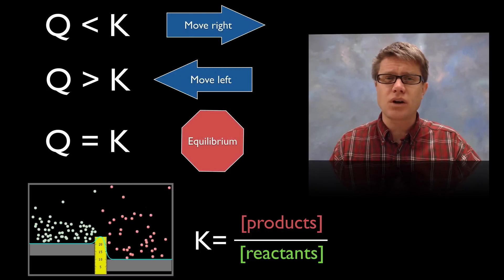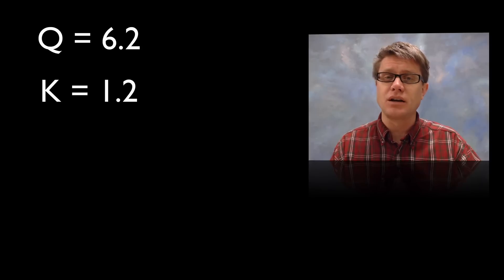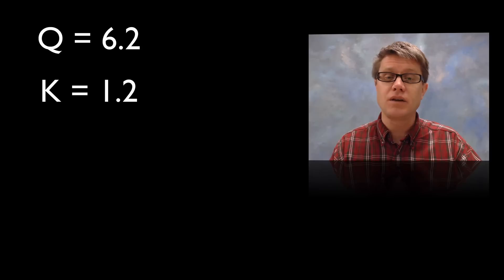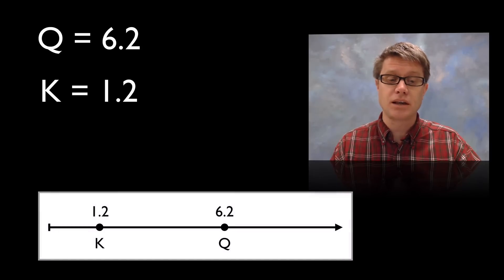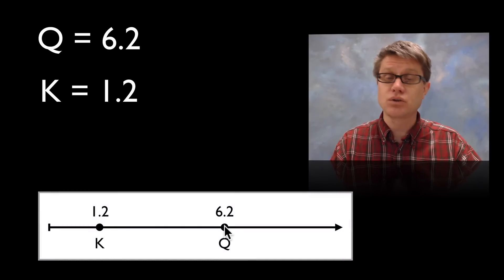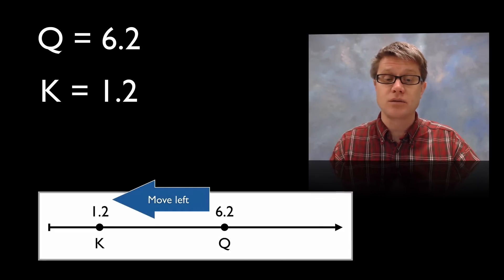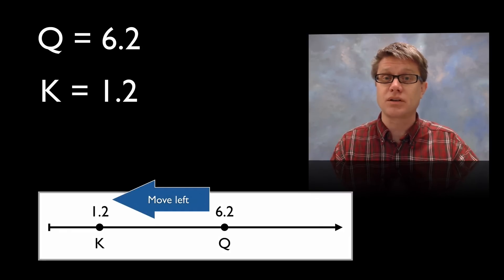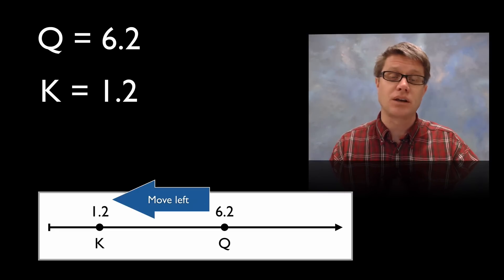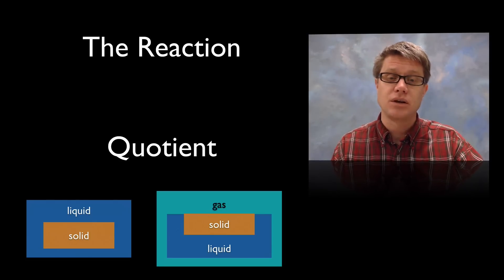It's sometimes hard to remember this, so if you put it on a number line it helps quite a bit. If I put my Q and K values on a number line — K is where I want to be and Q is where I am — I can see which way I need to move. In this case I have to move from right to left, converting more products into reactants to eventually reach K.